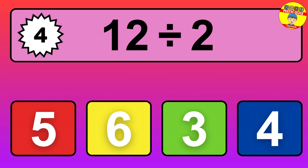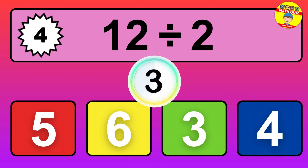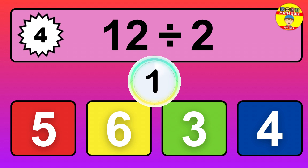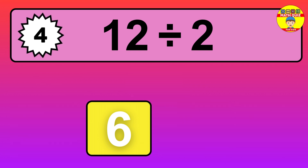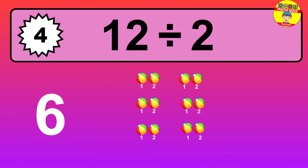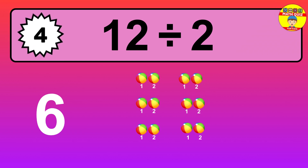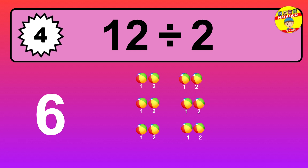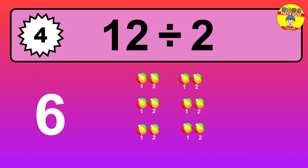12 divided by 2 is... time to think. Let's go to the solution. Divide the number 12 by 2. Each group contains 2 units, so dividing 12 by 2 results in 6 equal groups. Thus, the result is: 12 divided by 2 equals 6.